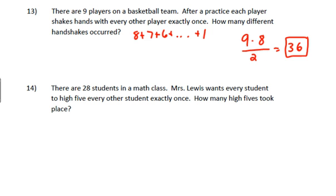For fourteen, there are twenty-eight students in a math class. Mrs. Lewis wants every student to high-five every other student exactly once. How many high-fives took place? Again, you could start and say that first student high-fived twenty-seven people, the second twenty-six because they had already high-fived with one. So you'd end up with twenty-seven plus twenty-six plus twenty-five all the way down to one. That doesn't seem like something I want to do. I would rather say I've got twenty-eight students all giving twenty-seven handshakes, but that's counting all of them twice.